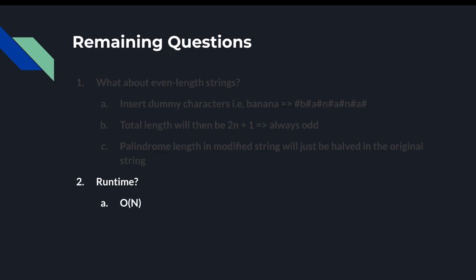The runtime of Manacher's is actually linear, which is crazy! I'm not going to go through a detailed analysis, but I suggest you walk through a string with those 4 rules for a string where every letter is different, like a, b, c, d, e, f, g, h, i, and do another walkthrough for a string where every letter is the same, like all a's. You'll be able to see for yourself that the runtime is indeed linear. Or you can look up a more rigorous proof on Google if you're not convinced.